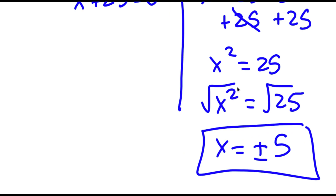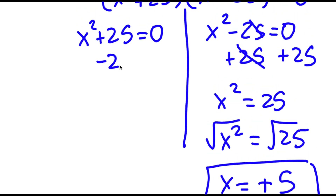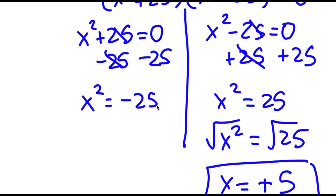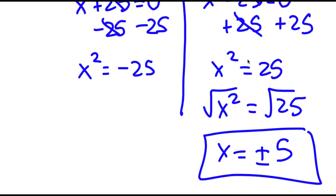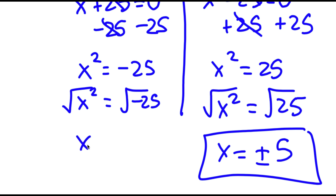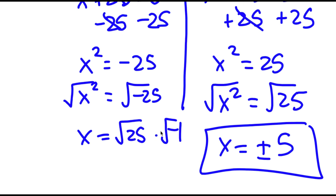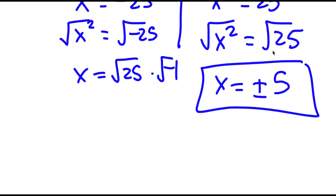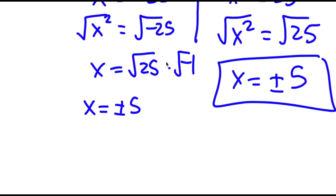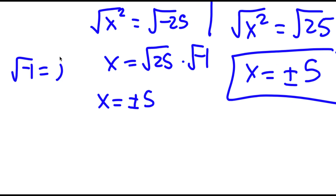Now for x squared plus 25 is equal to 0. To solve this, I'm going to subtract 25 on both sides — these two cancel out — so now I have x squared is equal to negative 25. I'm going to take the square root on both sides. The square root of x squared is x, and the square root of negative 25 — I can rewrite this as the square root of 25 times the square root of negative 1. The square root of 25 is positive or negative 5, and the square root of negative 1 is the imaginary number i. So now I have x is equal to positive or negative 5i.